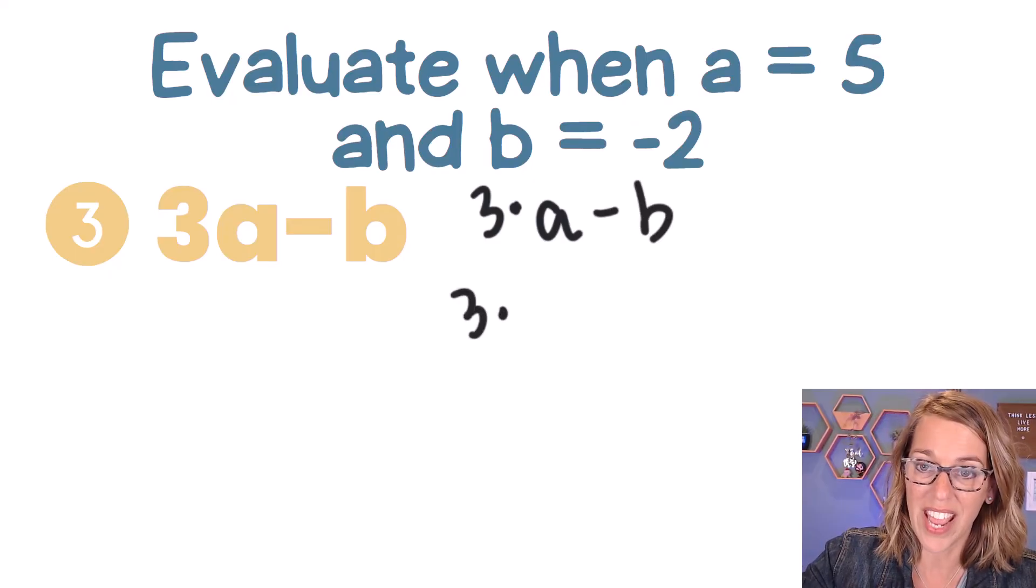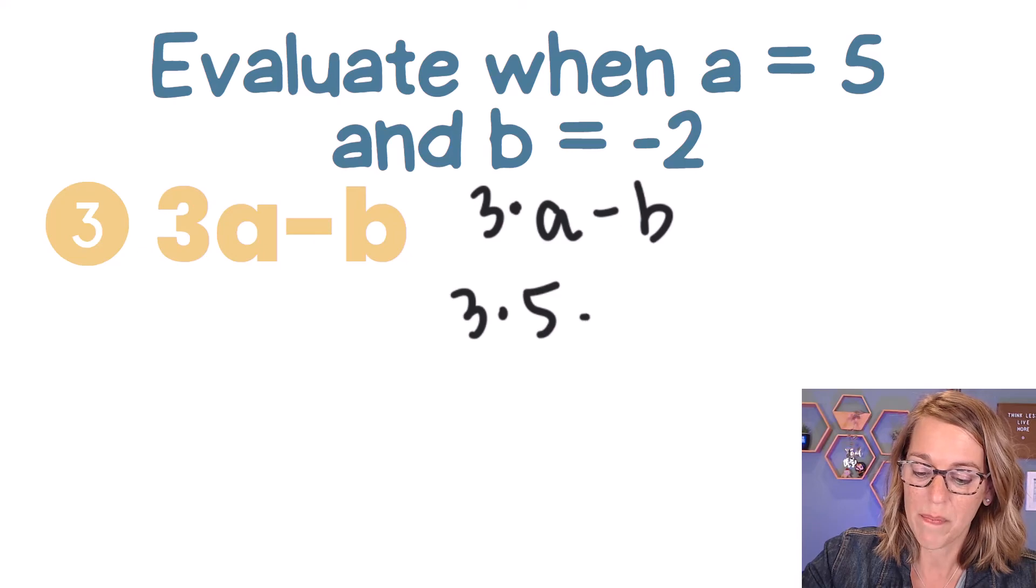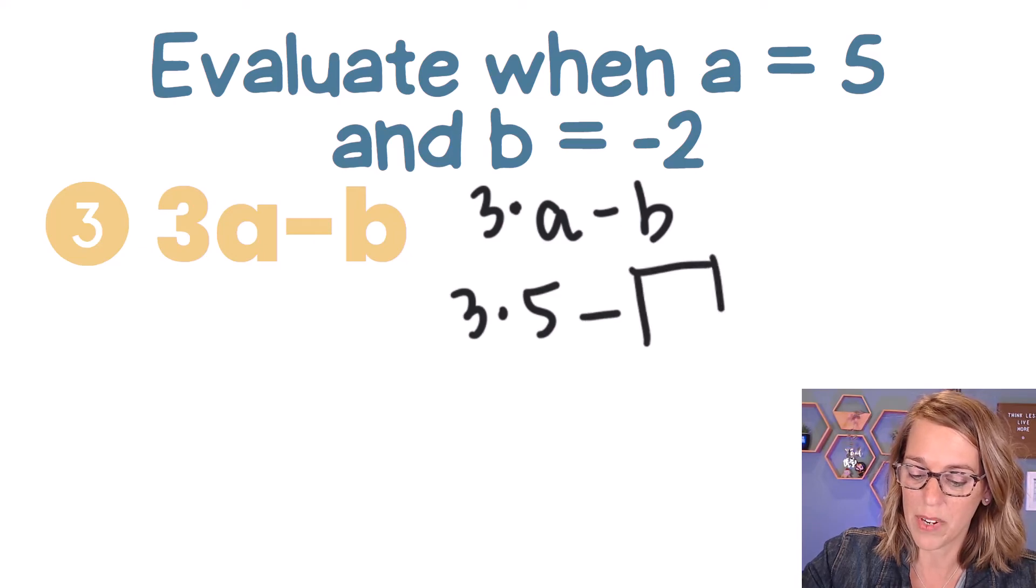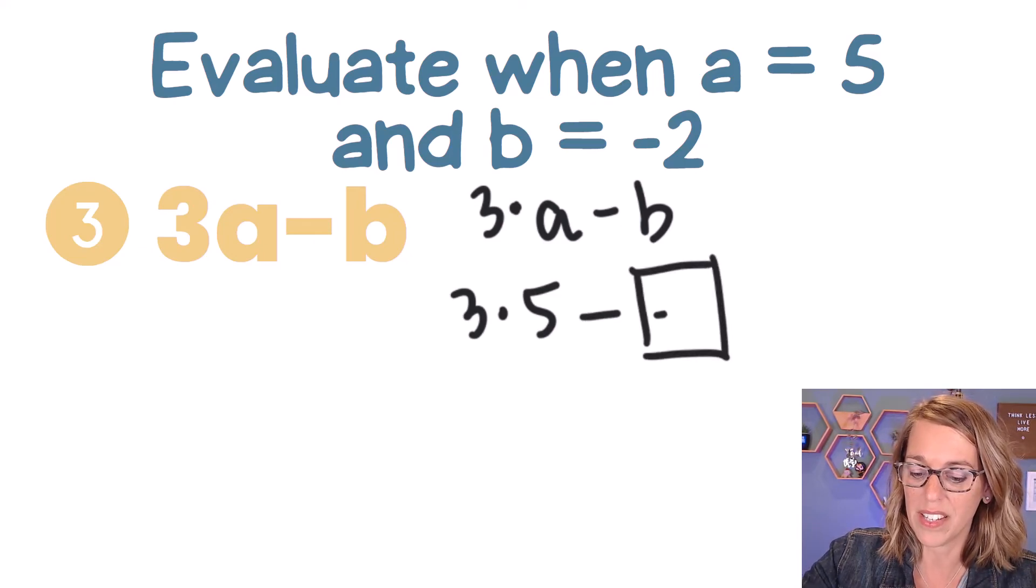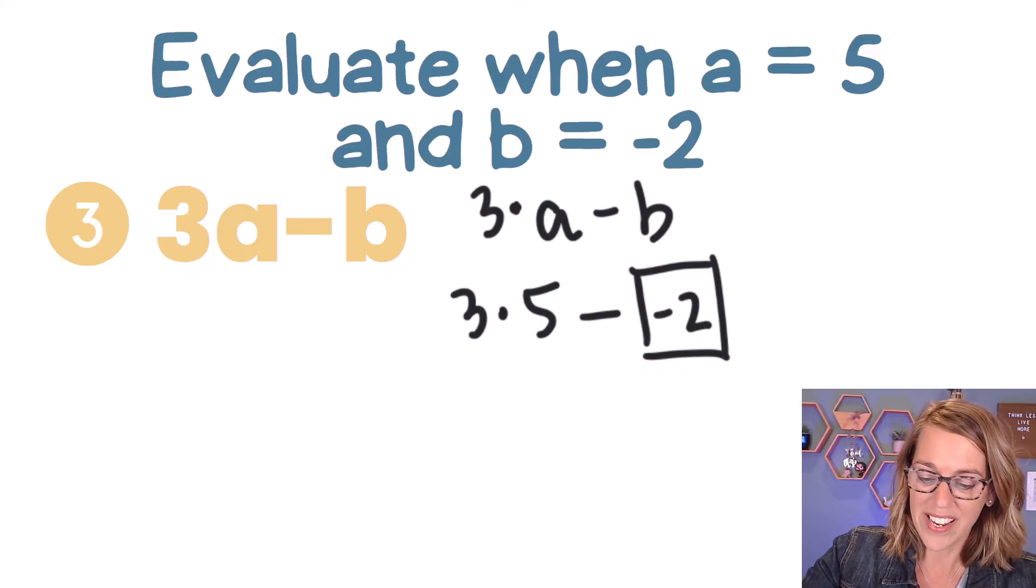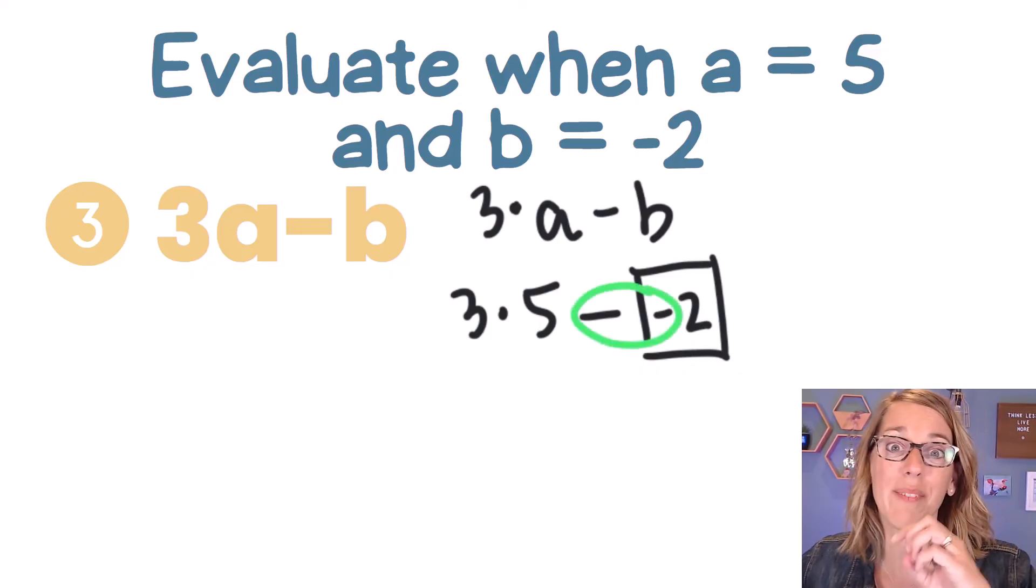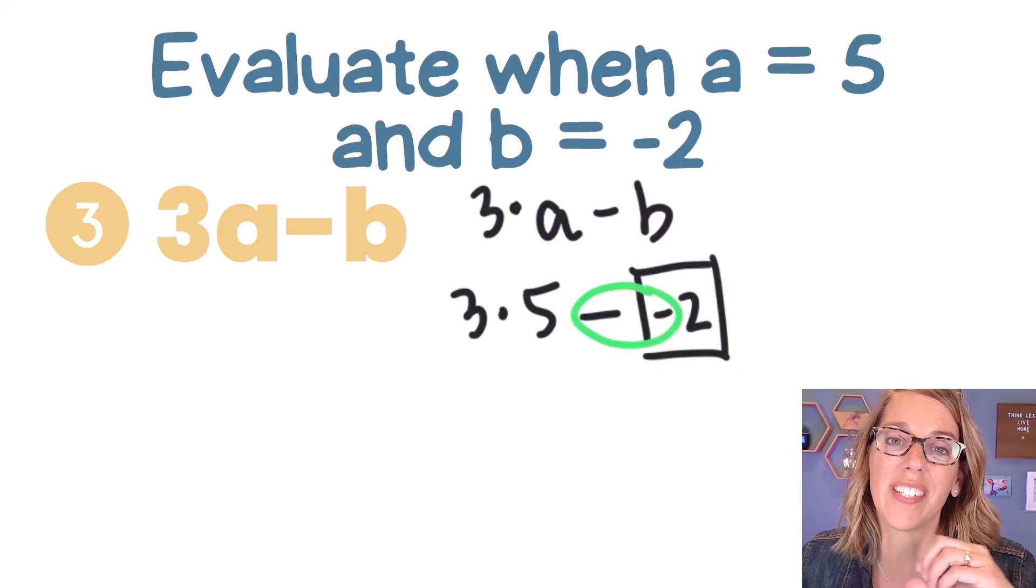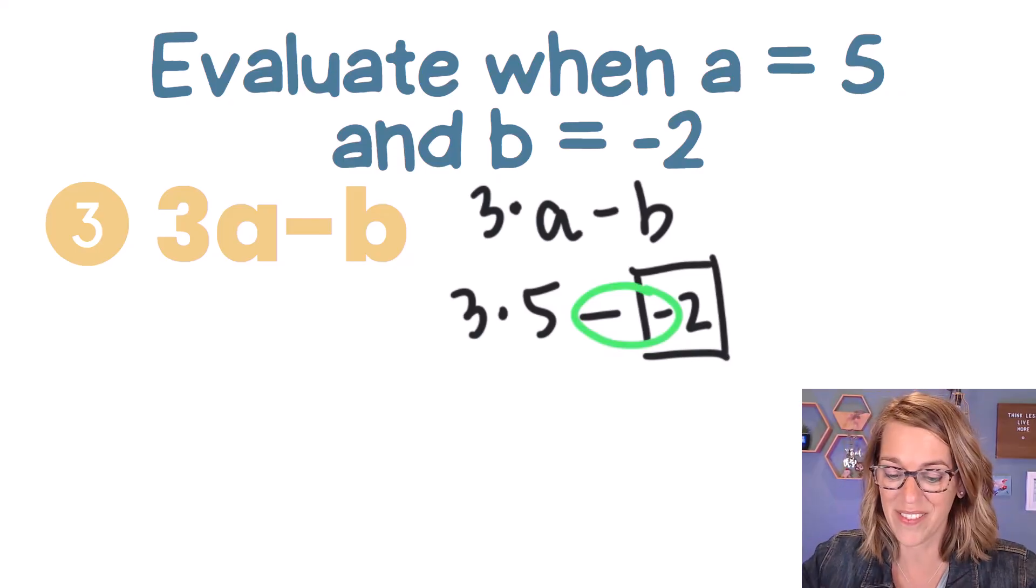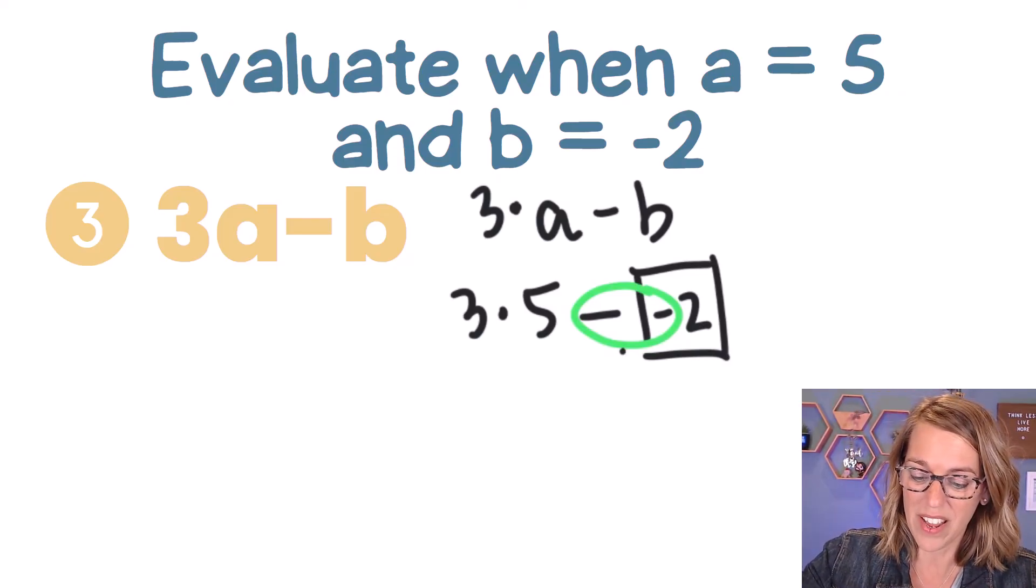So I want 3 times A, which is 5, minus that value for B. I'm going to put that guy in a box because B is a negative 2. Now I end up with a negative times a negative. You can also think of this as the opposite of a negative. The negative of a negative becomes plus.